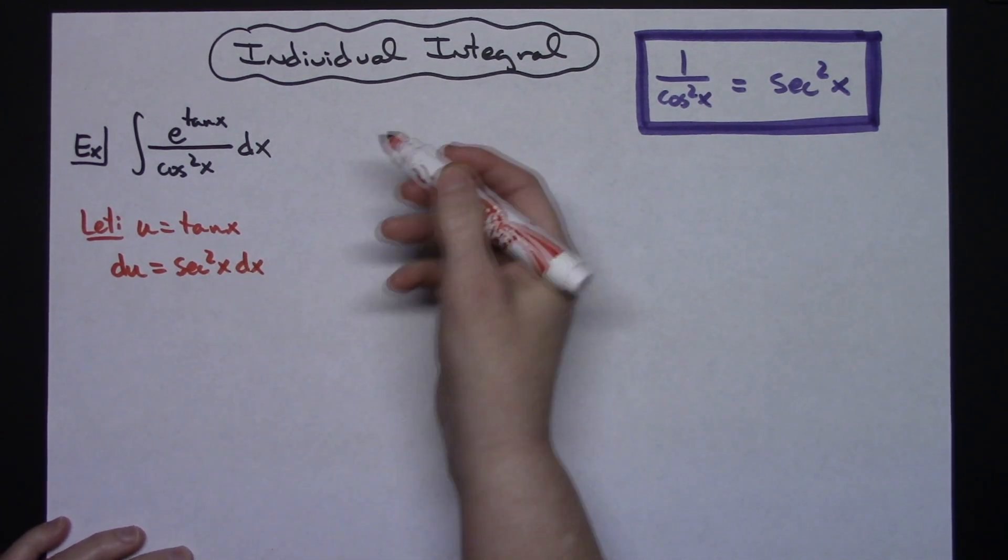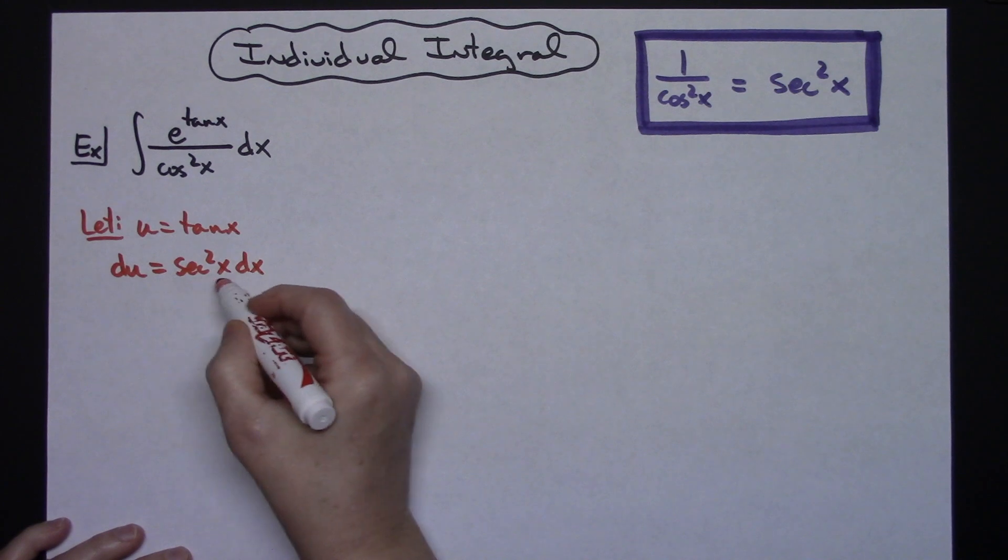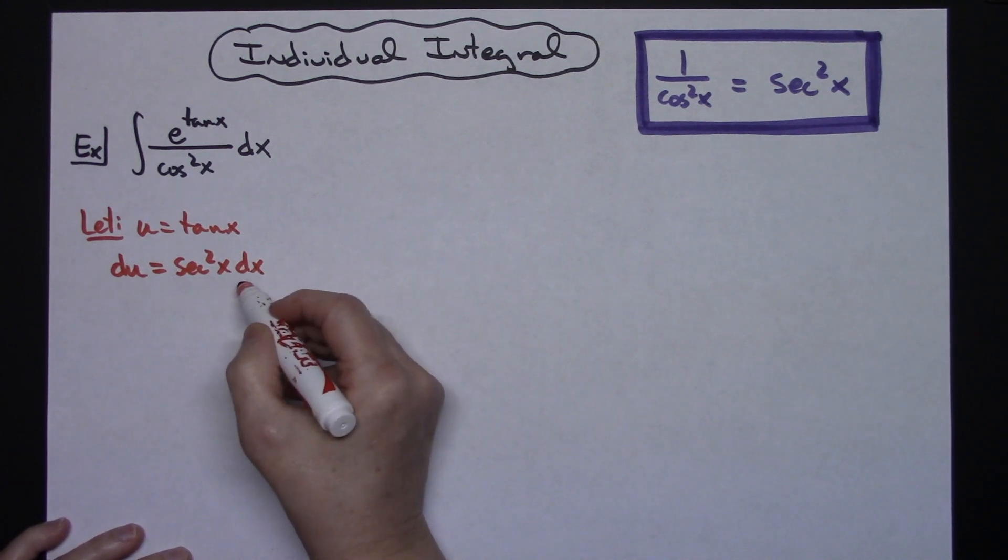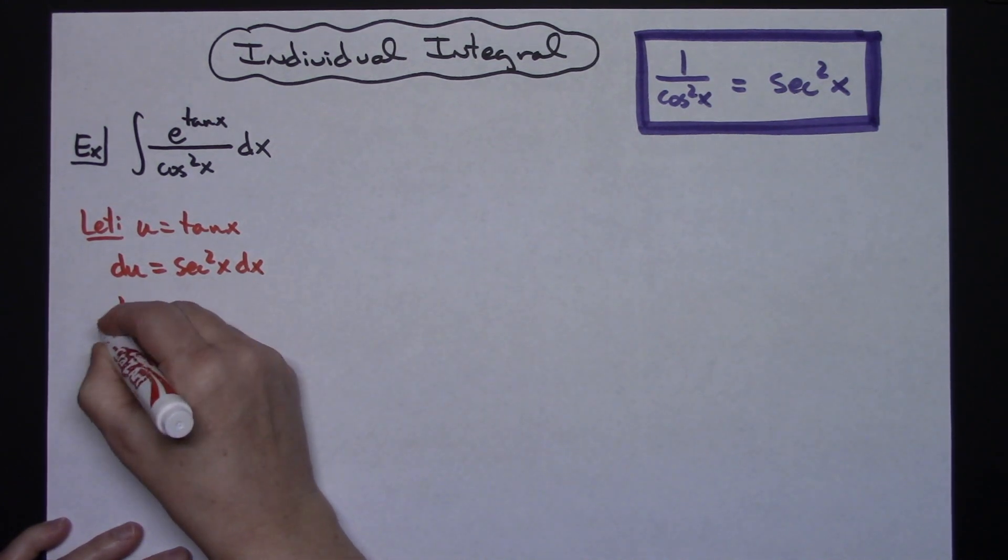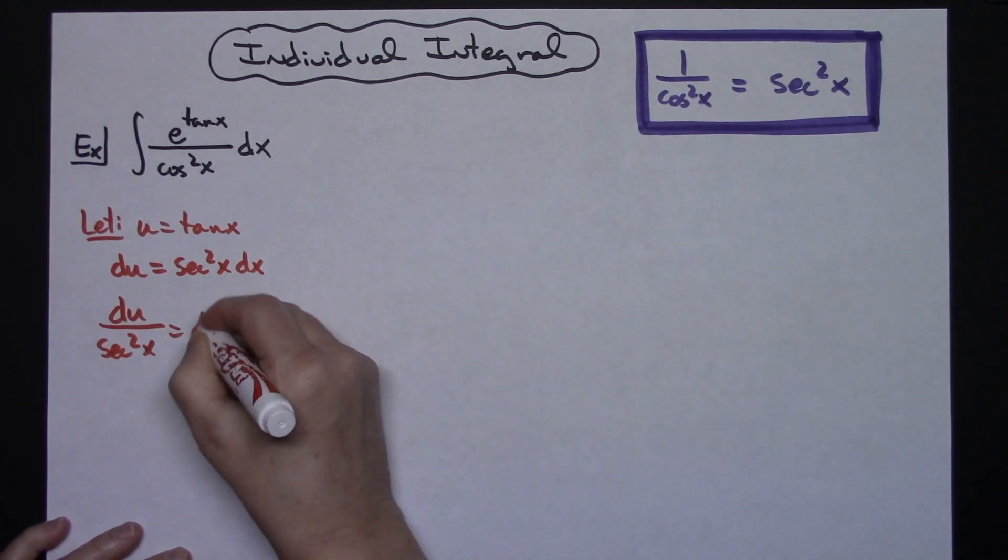Now to make substitutions easier here I'm going to divide by that secant squared x. So I'm solving for dx. I'll have du over secant squared x equals my dx.